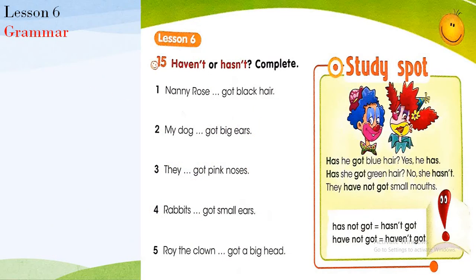We also studied a grammar lesson, which was 'haven't' and 'hasn't'. This is the negative form of the present perfect — 'have got' and 'has got'. So as I said, this is the negative form of 'has got' and 'have got'.